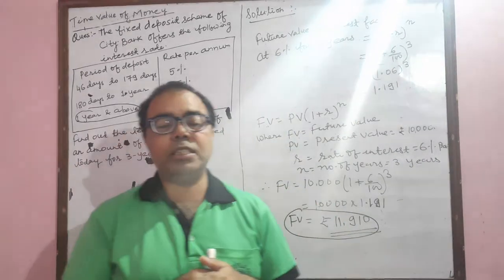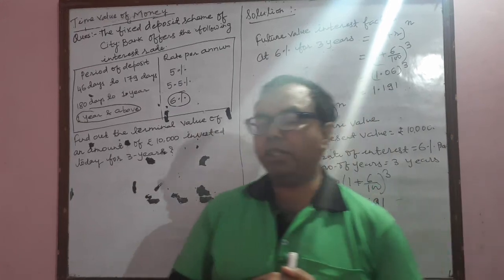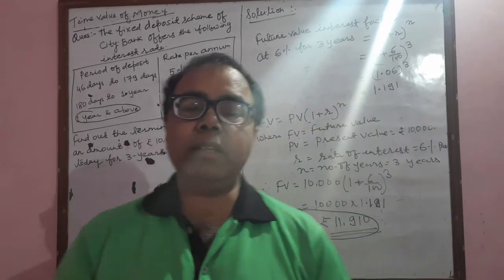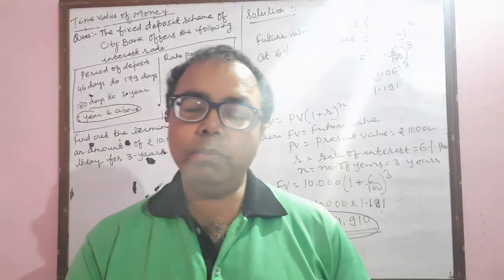It means if you are doing the FD deposit in the City Bank account of this question for the next three years, you will get the rate of interest of 6% per annum. If you deposit 10,000, at the end of the third year you will get 11,910 rupees.